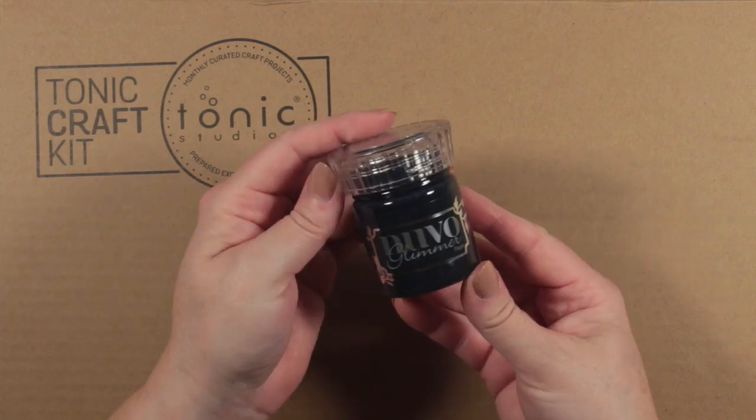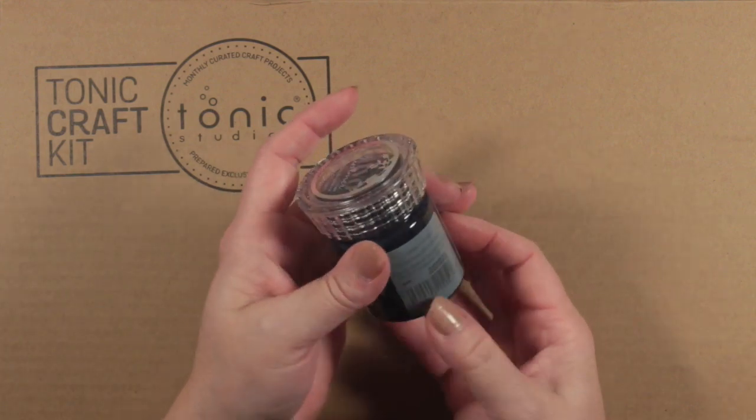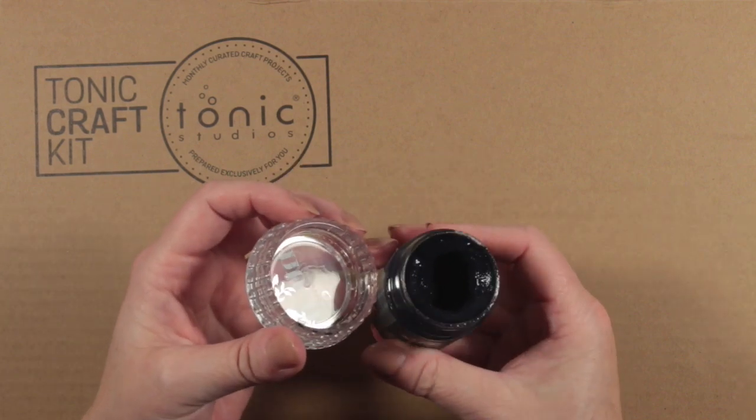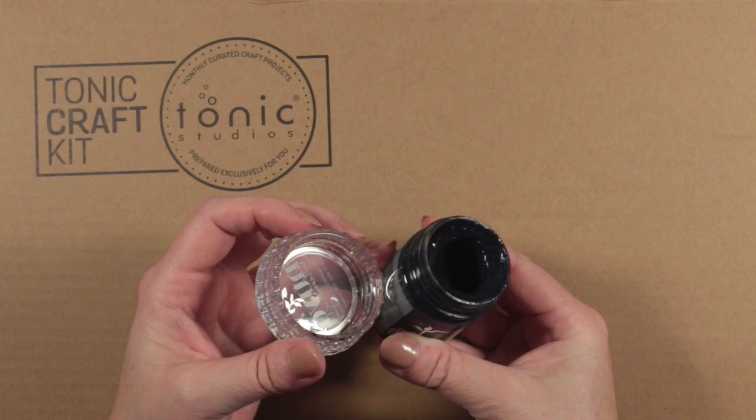Finally, we have black diamond, and this is a very generous pot of glimmer paste. This is lovely and creamy, and you can add this to cardstock to change the color. I'll show you that later.